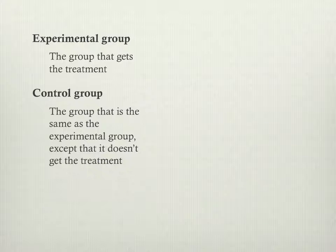Confounding means that the results or effects are all mixed up or confounded together and you can't disentangle them — you can't tell what's causing what. So we need to rule that kind of thing out by making sure that the two groups at the beginning of the experiment are exactly the same.